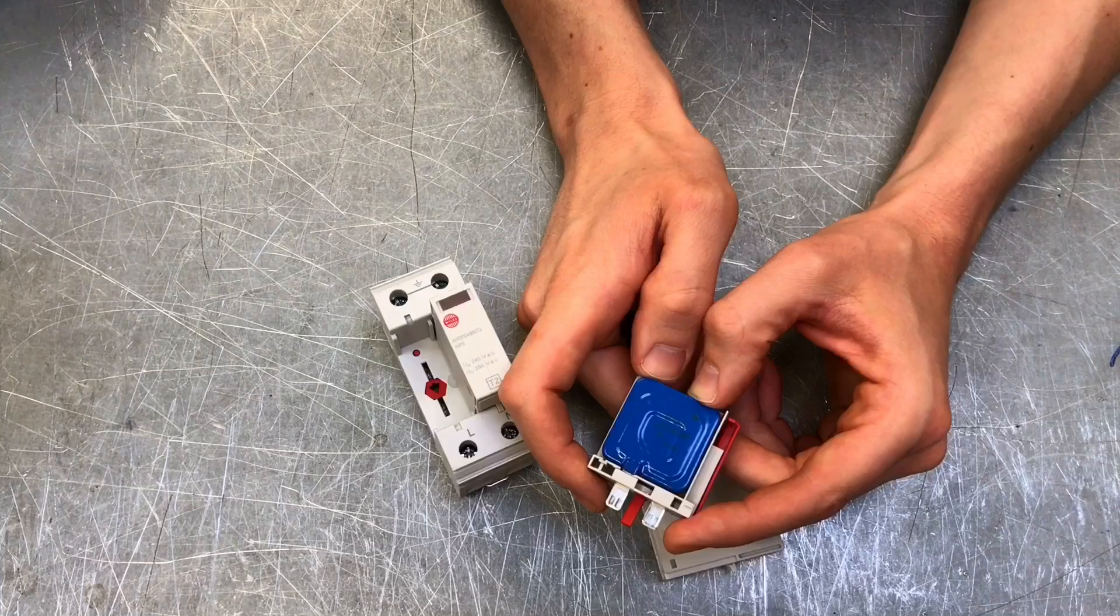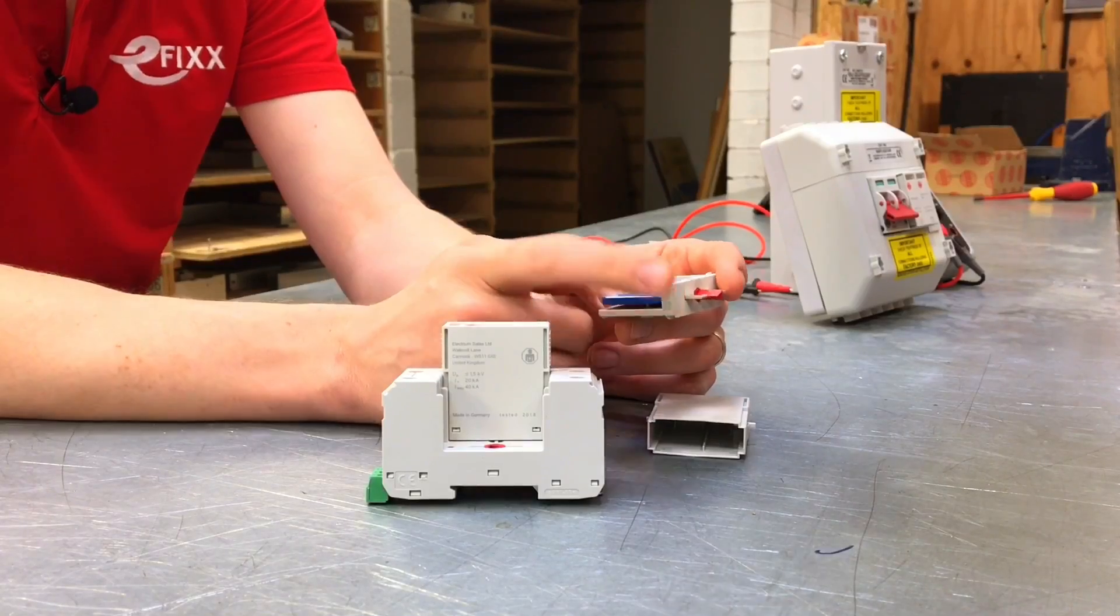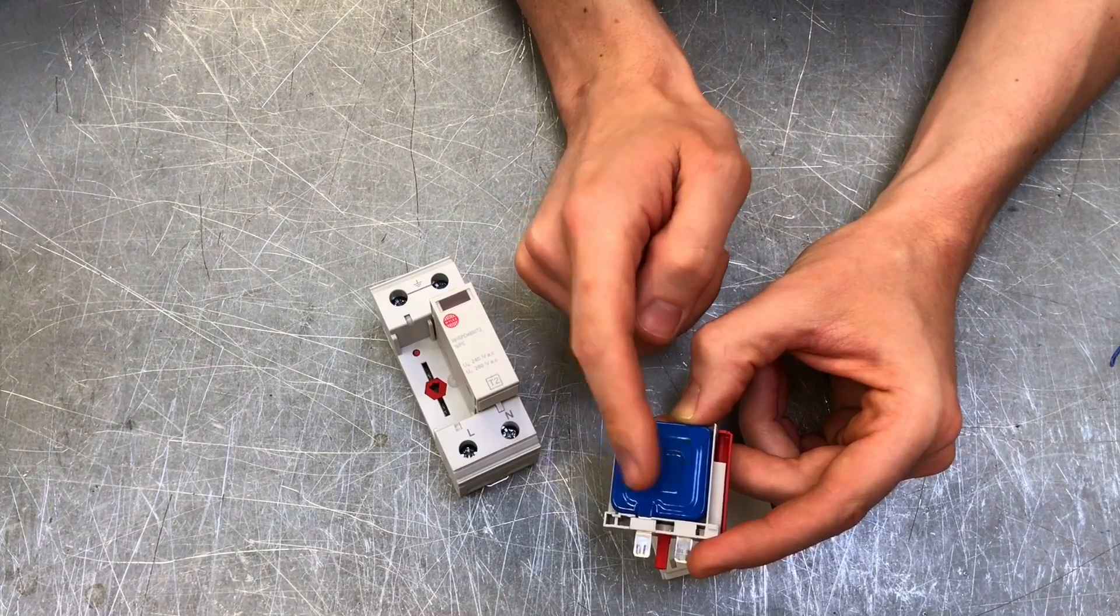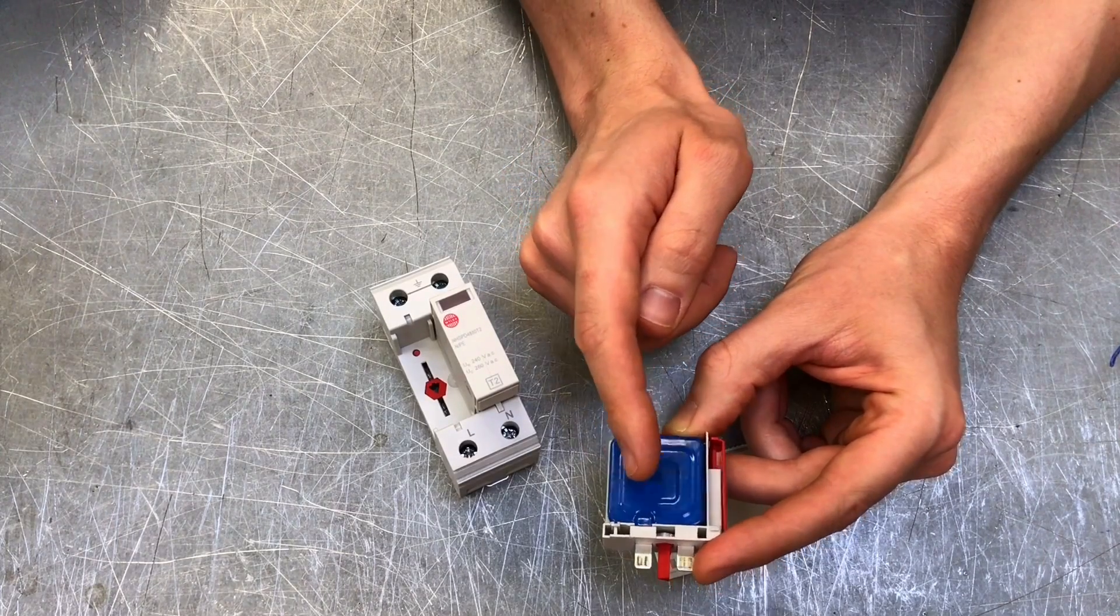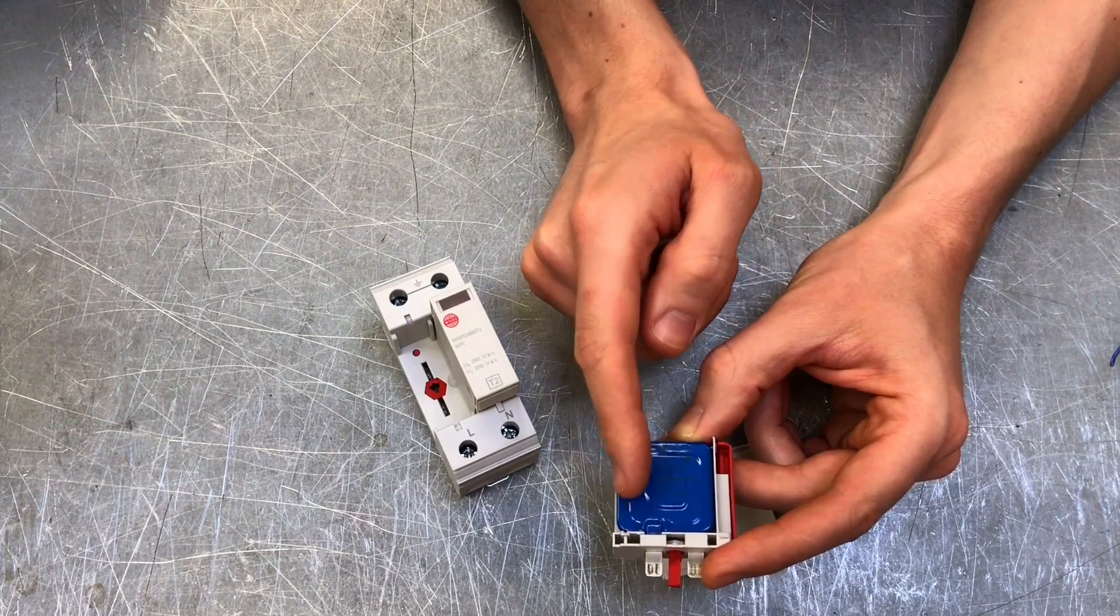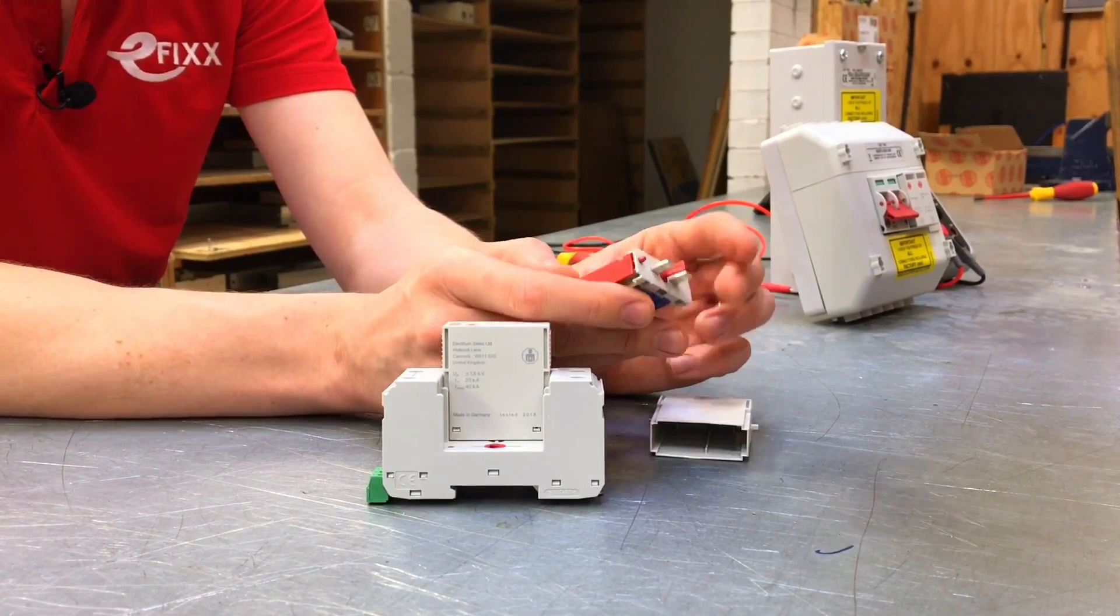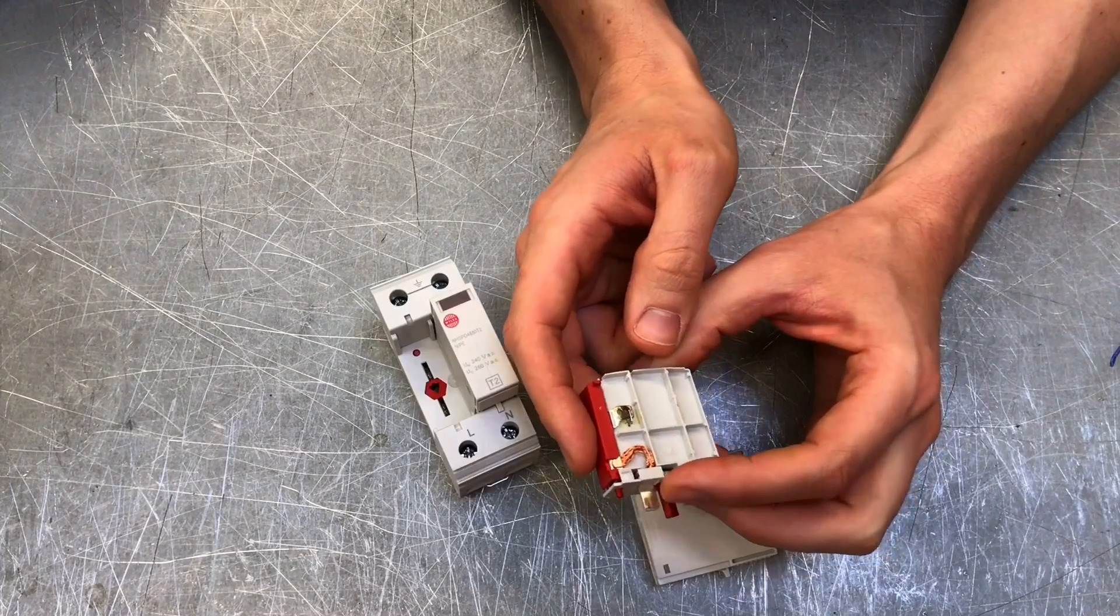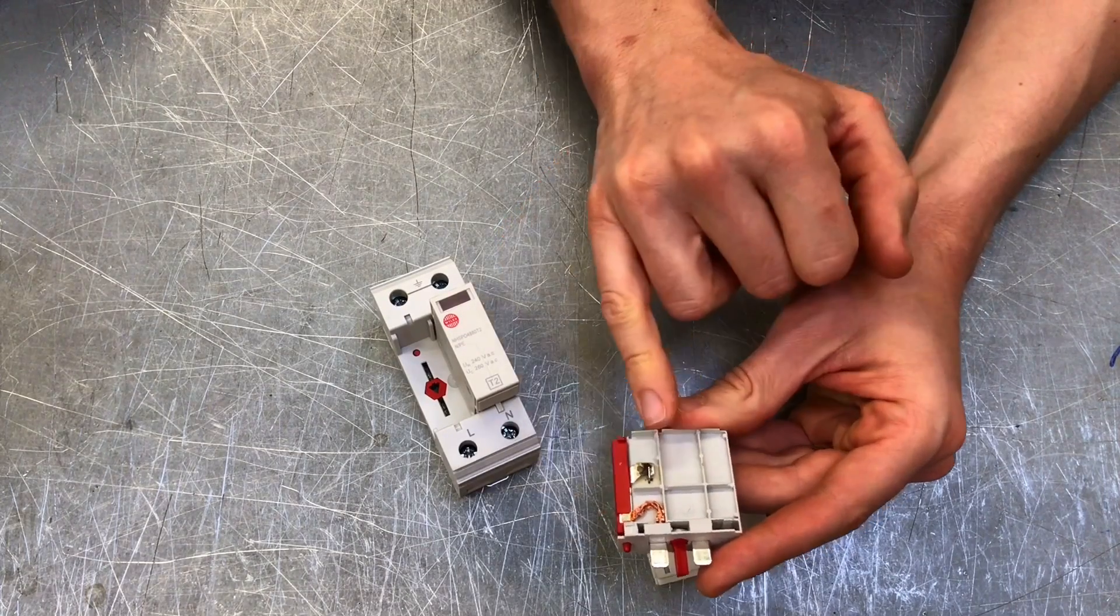When the varistor's life has elapsed, what happens to indicate this? These have an operational life. There'll come a point where its resistance won't drop down anymore after it's taken a number of shots from higher voltages. Because this is connected between line and earth, there's no way we could tell just by circuit operation that it had reached end of life. The circuit will continue to function perfectly happily until there's a huge transient voltage, and if this has gone past its operational life, it simply won't work and will be worse than useless because we think we've got protection when we don't.